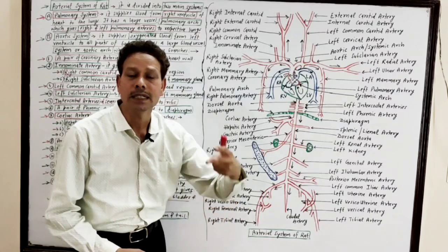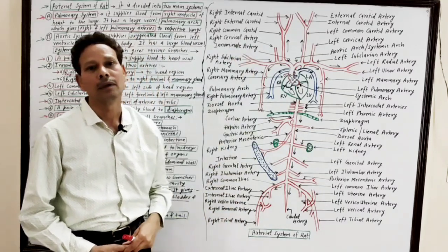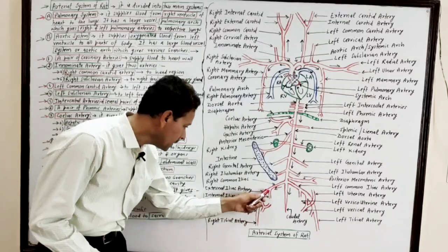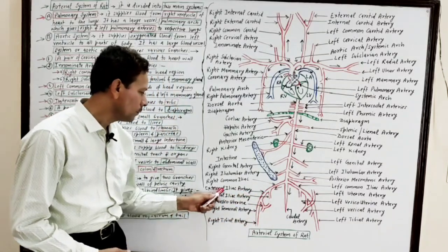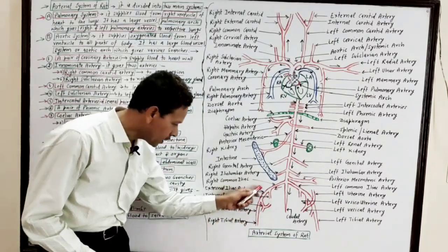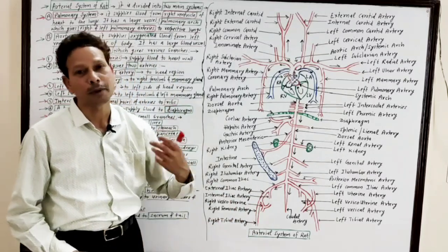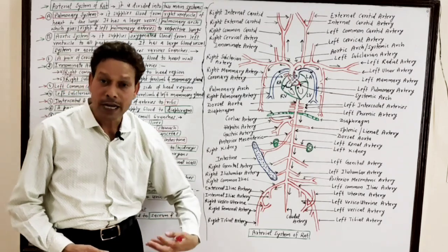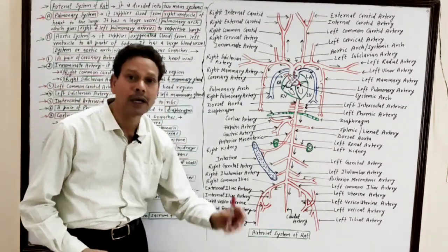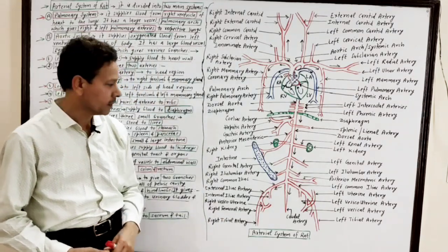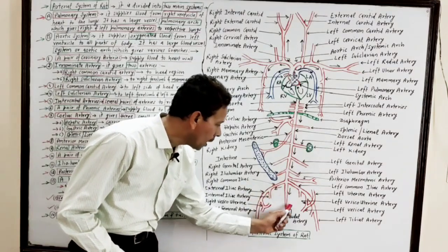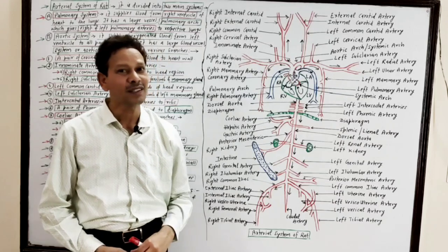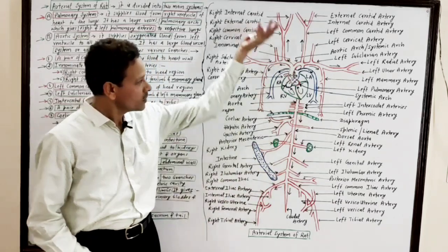The uterine branch gives supply to the uterus. The external iliac artery carries oxygenated blood to the lower parts of the hindlimb, supplying blood to the femur, tibia, and lower parts. The single caudal artery carries blood to the tail region and sacrum.